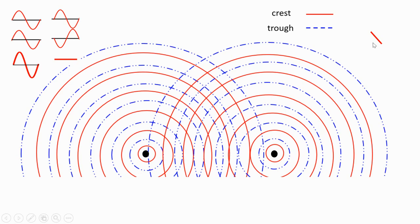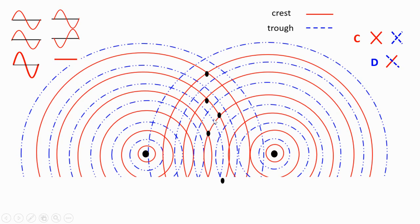When a crest meets with a crest, we have constructive interference. Troughs with troughs also gives us constructive interference. On this picture we are going to find the intersections between crest with crest. We can identify crest-with-crest intersections at multiple points, and we mark all of those intersections.